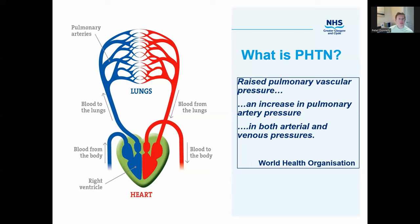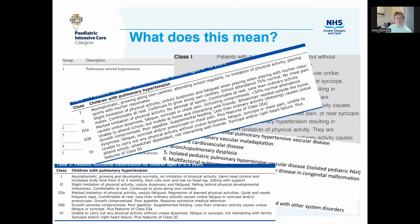How might we classify pulmonary hypertension? We need to think about it in a system that makes it manageable because it's quite a complex condition. There are a number of different classification systems that exist, and they vary in terms of what they're trying to achieve. The Dana Point classification from 2008, established at the Fourth World Congress of pulmonary hypertension, uses five main groups, and it looks at the various aetiologies — what conditions lead you into each group. I find that useful because it starts me thinking about the underlying cause and underlying condition causing this type of pulmonary hypertension.